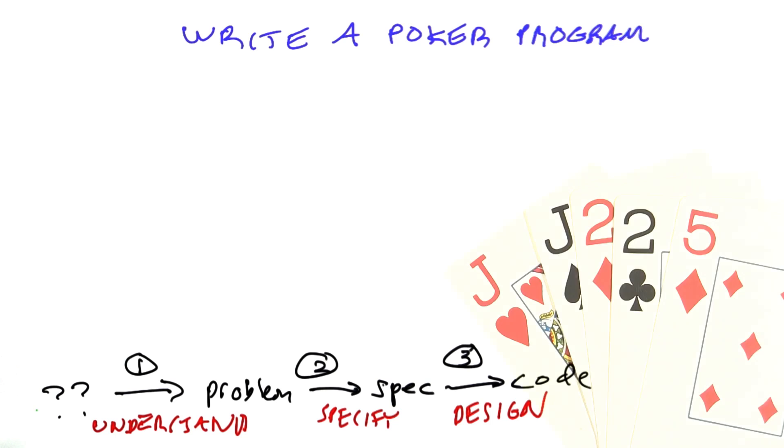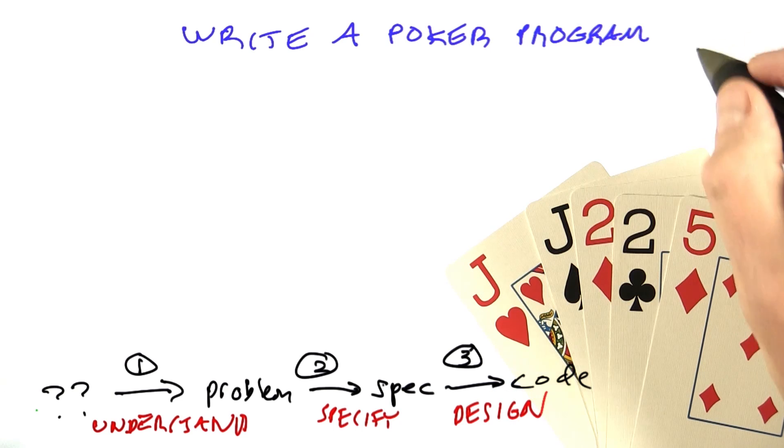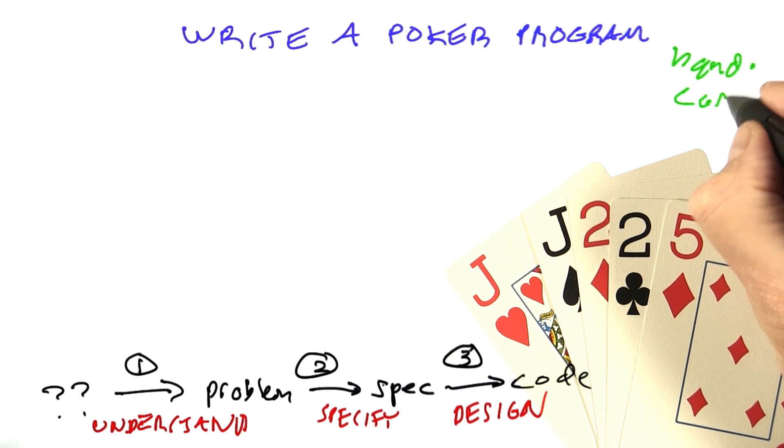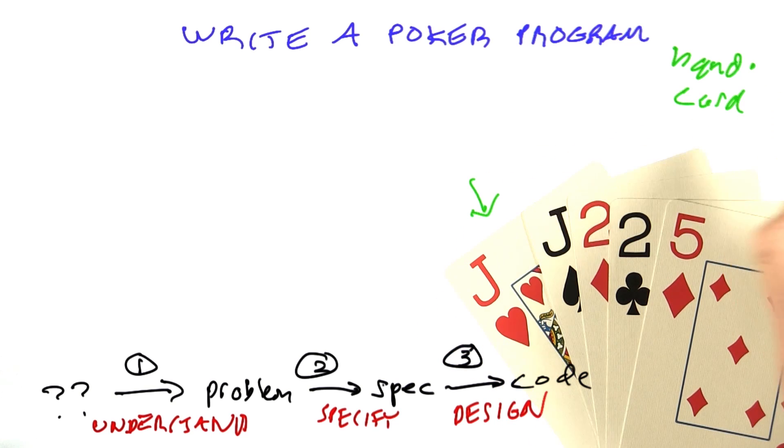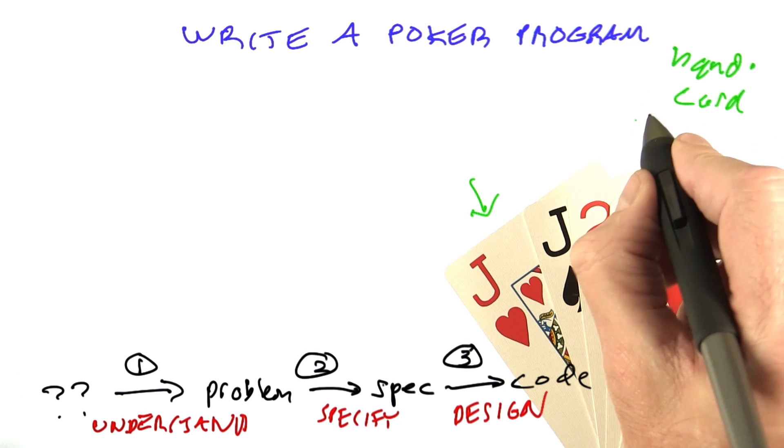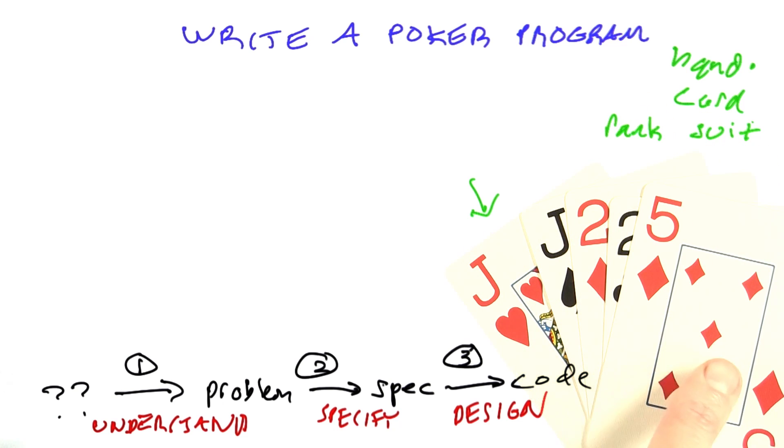Let's look at what we have. First, we have this notion of hands. A hand consists of five cards. Here's an individual card. A card has a rank and a suit. In this card, the five of diamonds,